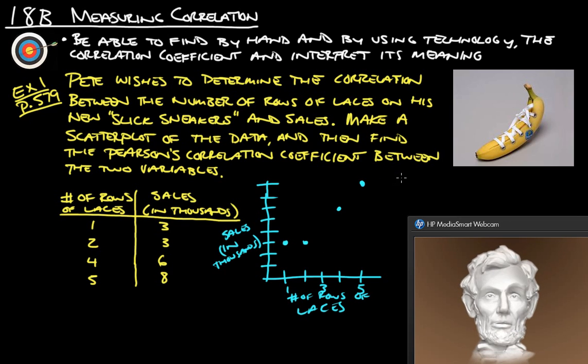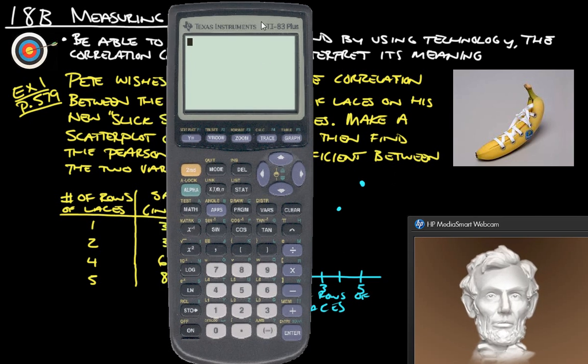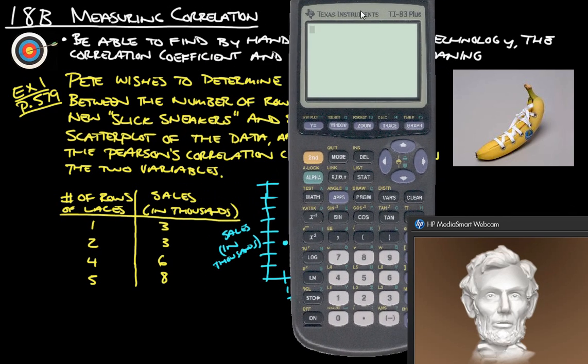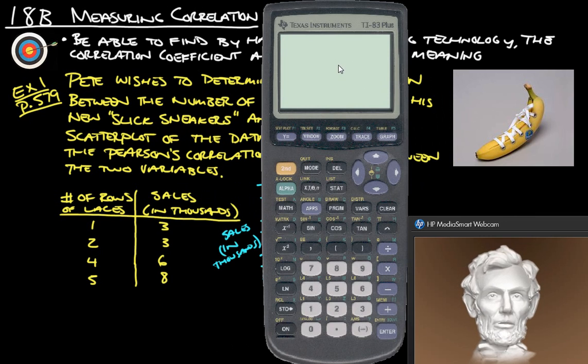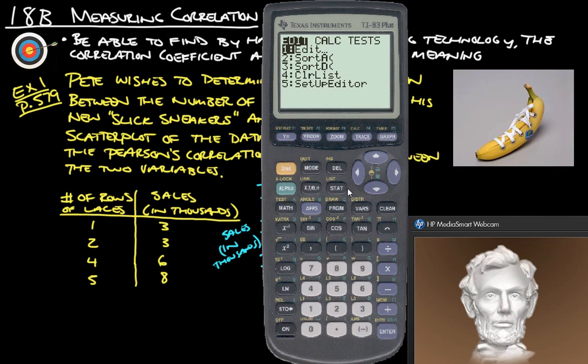So now what we're going to do is we're going to find the Pearson's correlation coefficient. And the good news is we can find this on our graphing calculator, just like what we did on the 18A notes. Okay, so you're going to want to turn it on, go into stats, and we are going to edit.